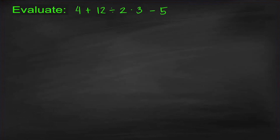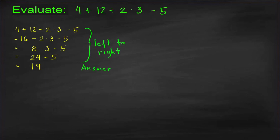Evaluate 4 plus 12 divided by 2 times 3 minus 5. What if we are allowed to perform the operations in any order that we want? One may perform the operations from left to right: 4 plus 12 is 16, 16 divided by 2 is 8, 8 times 3 is 24, and 24 minus 5 is equal to 19.